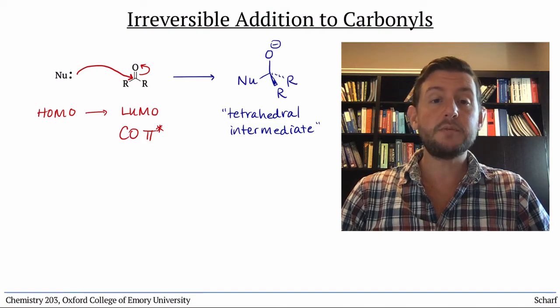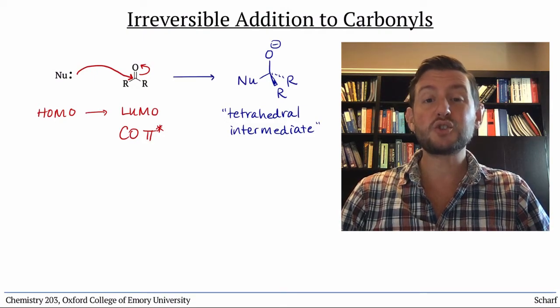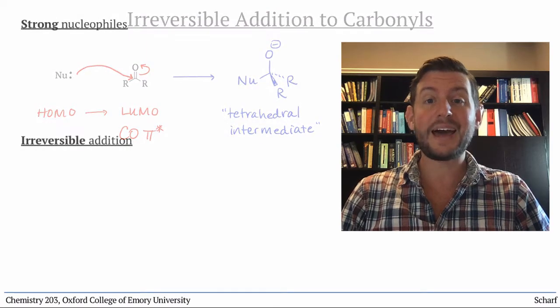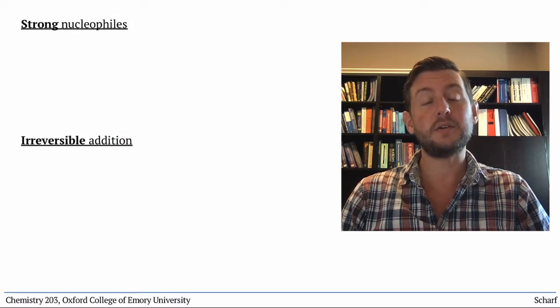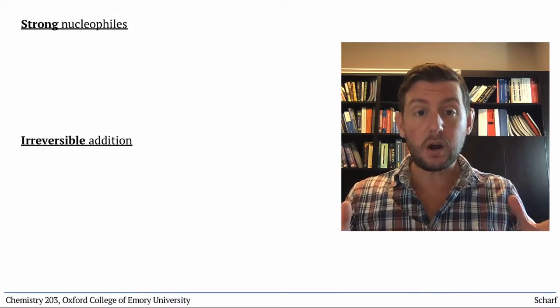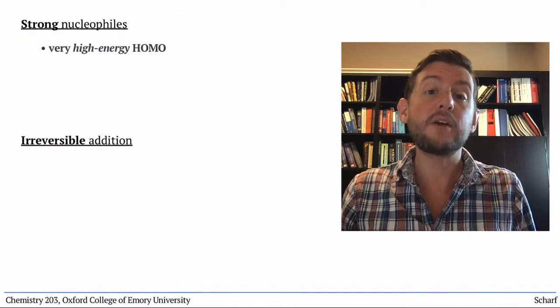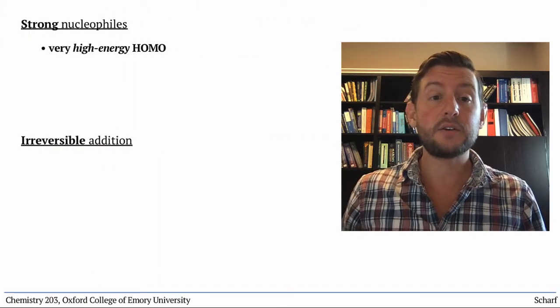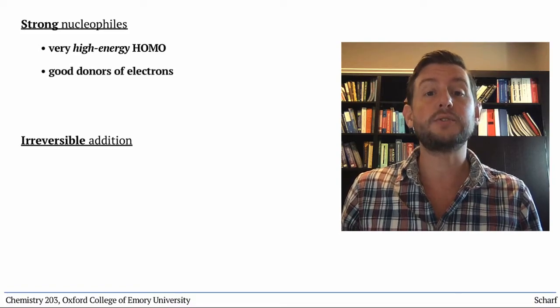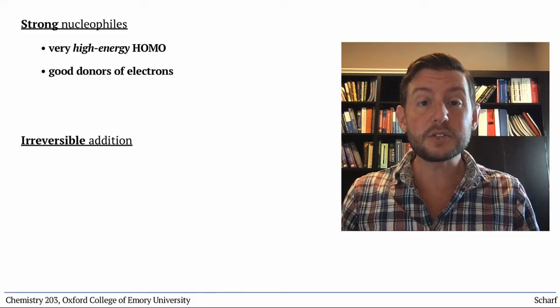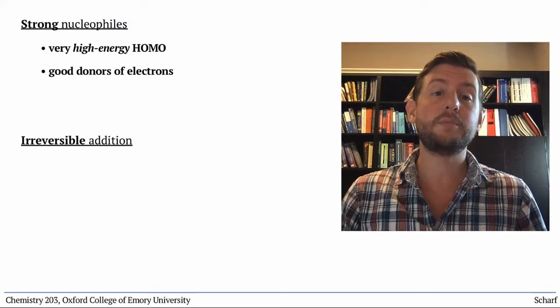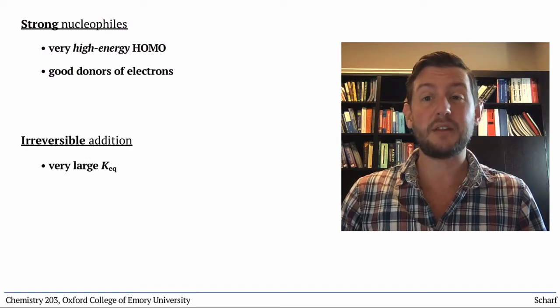The first type of nucleophiles we'll deal with are strong nucleophiles that add irreversibly to carbonyl compounds. By strong, we mean that they have very high energy HOMOs and are therefore very powerful donors of electrons. And by irreversible, we mean that the equilibrium constant for the reaction is very, very large.